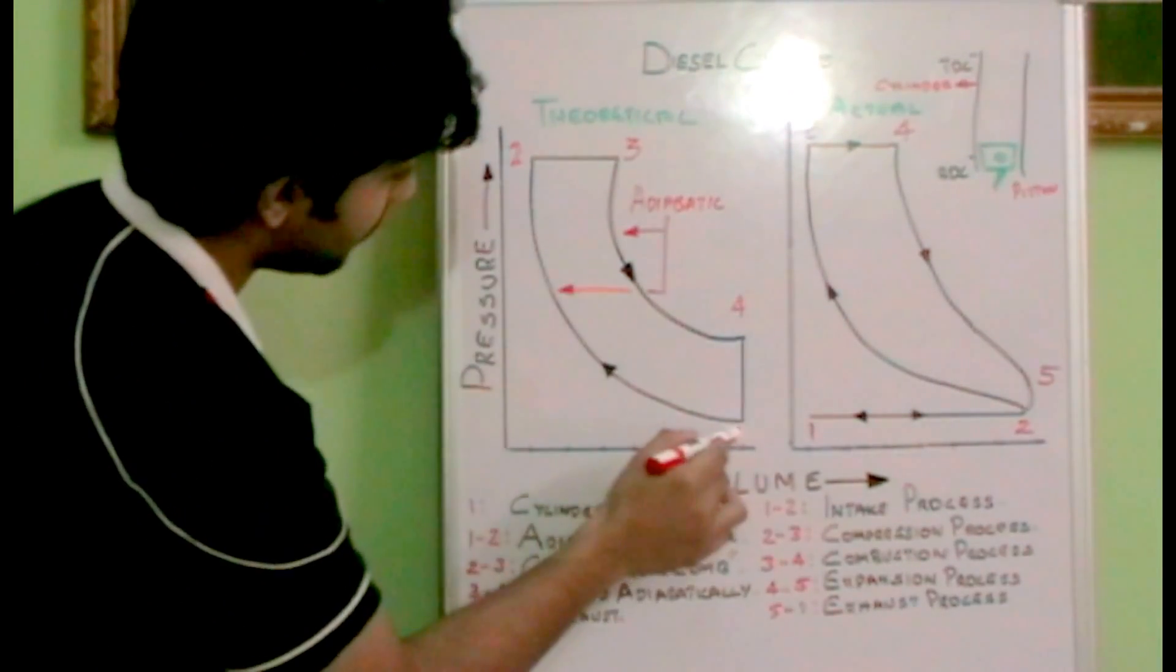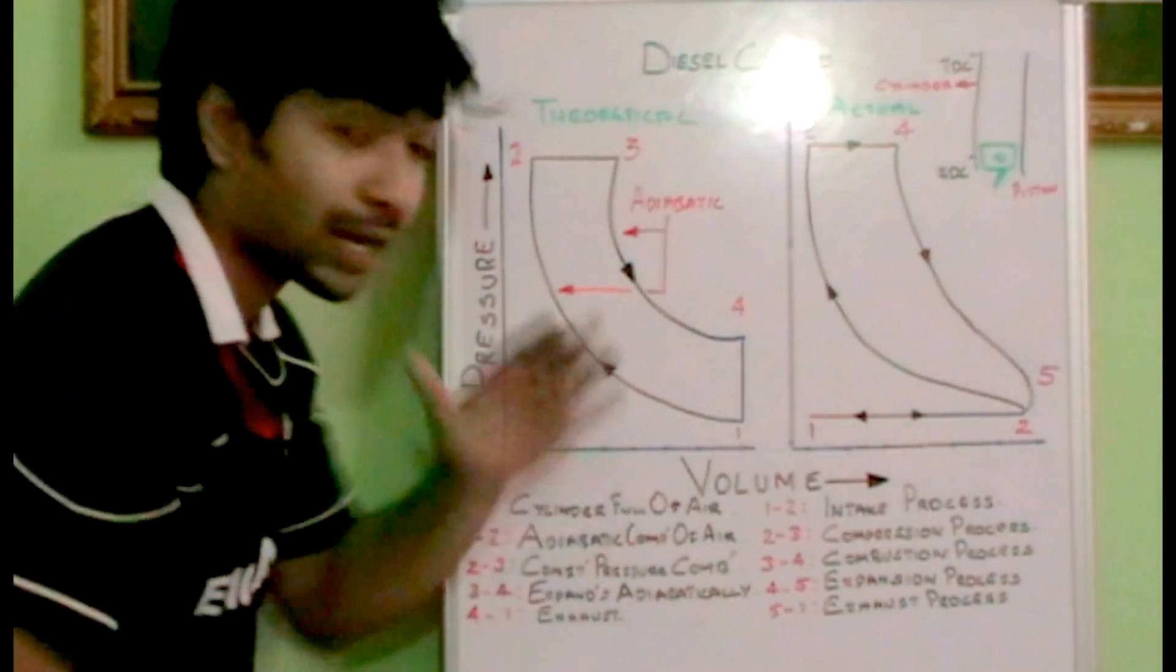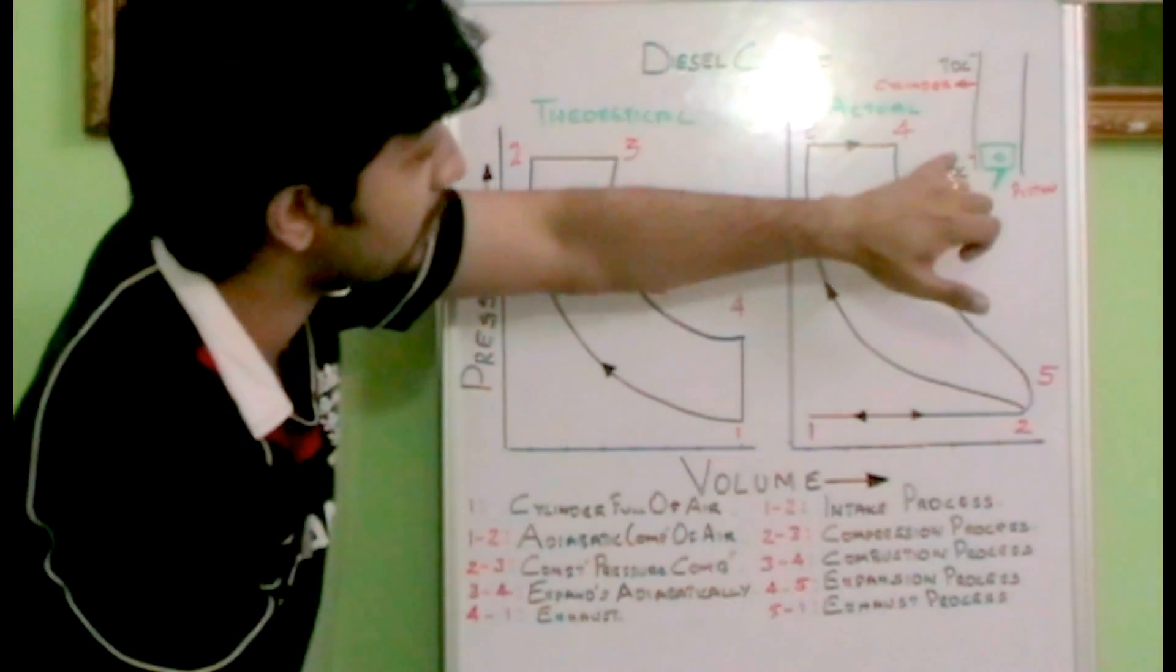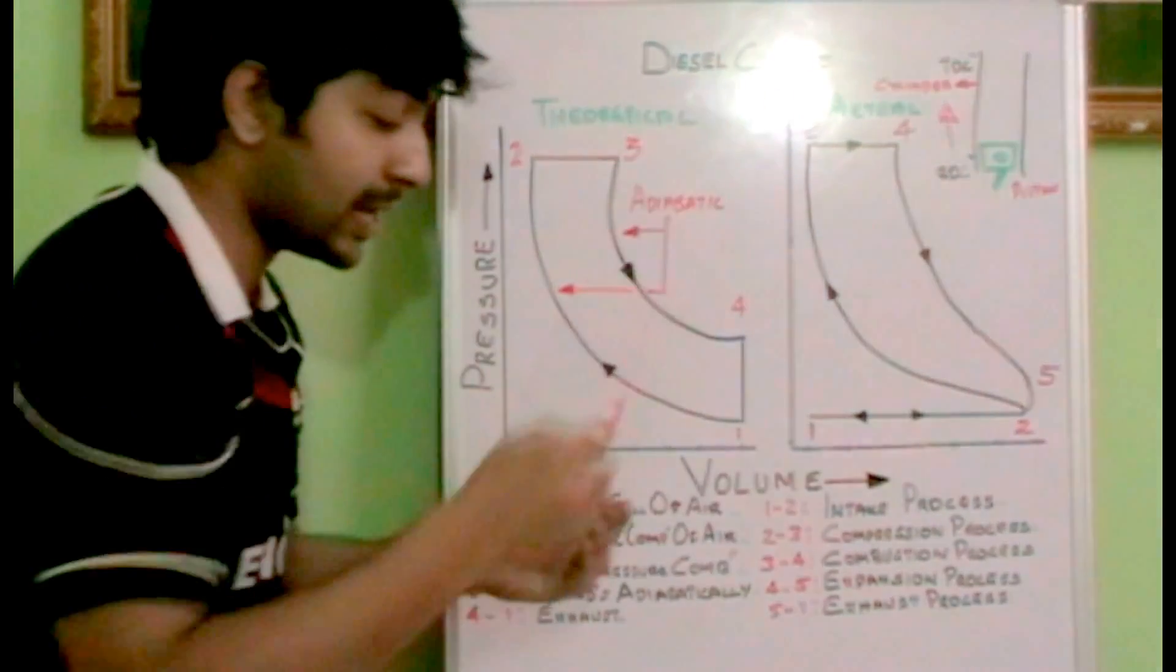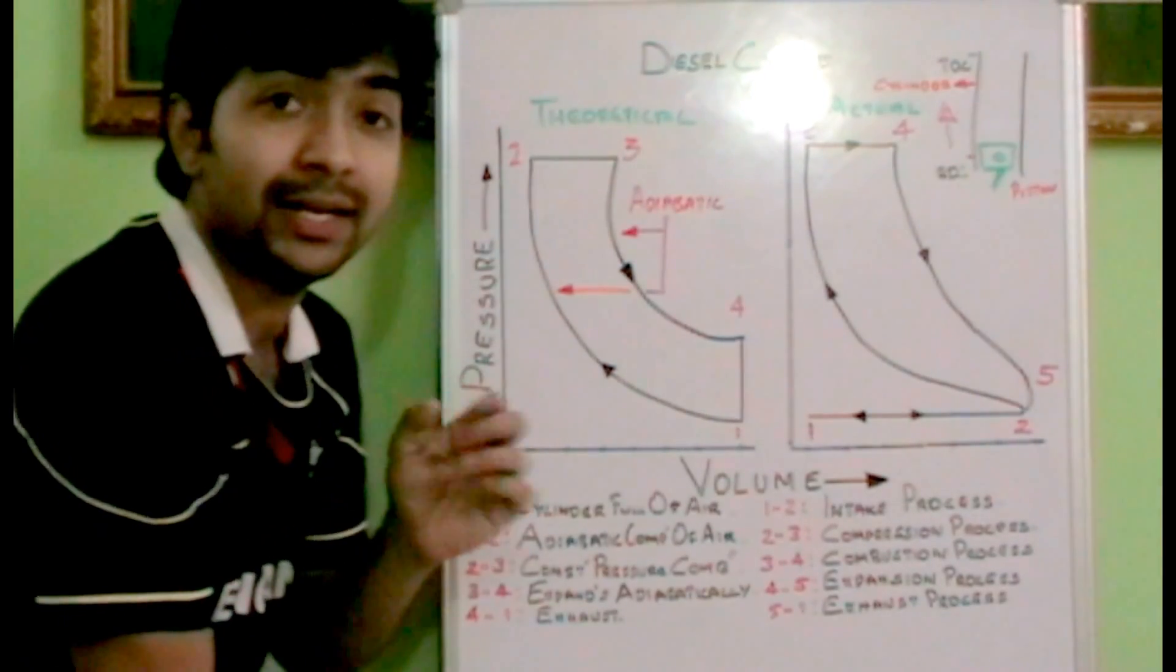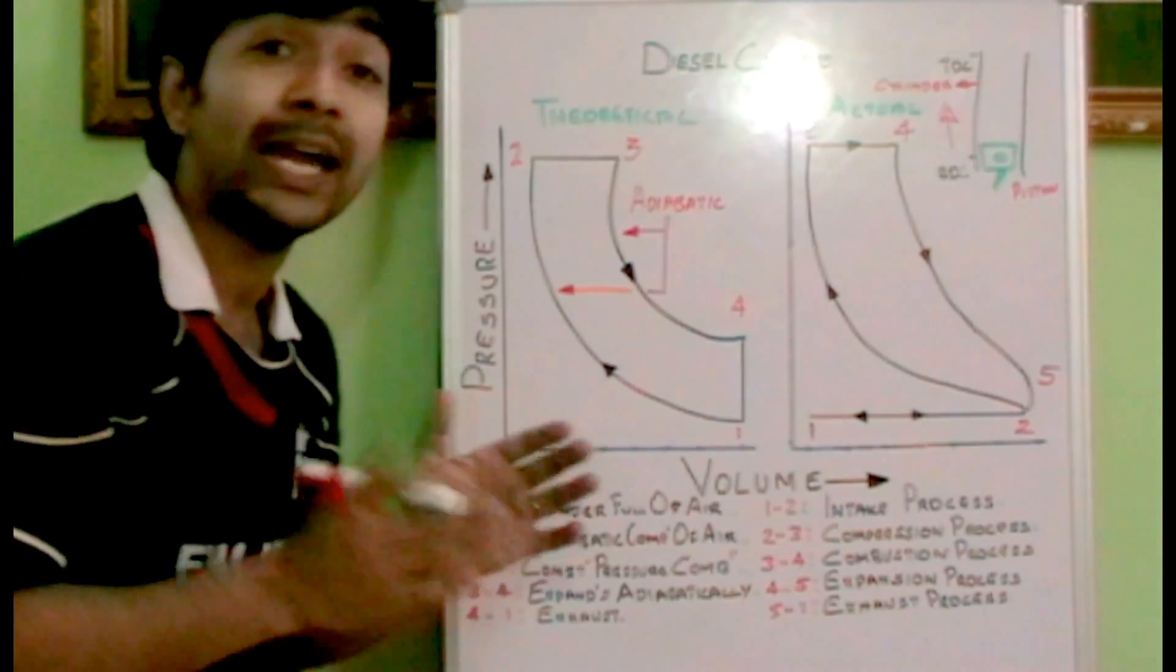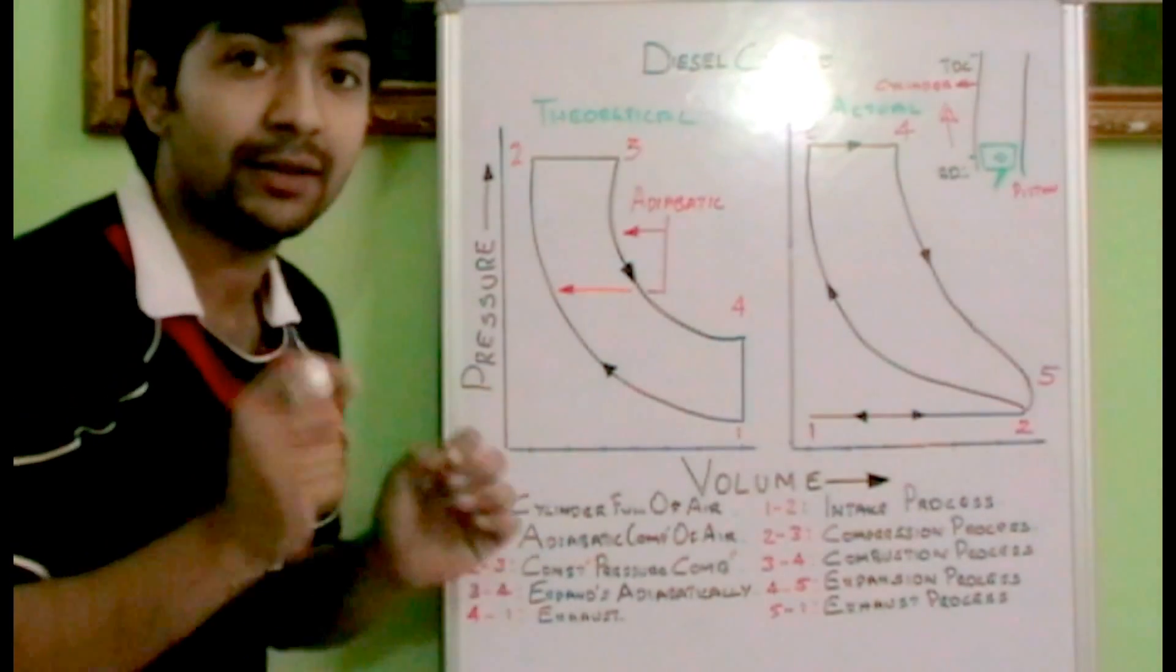From 1 to 2, as the piston moves from BDC to TDC, adiabatic compression of air is happening. Air gets compressed adiabatically. Adiabatically means in theory it is implying that no heat transfer is involved. It is a theoretical concept; practically there will be a difference.